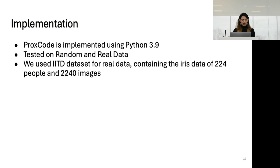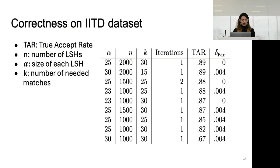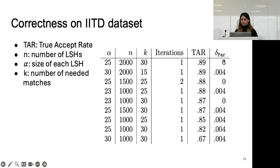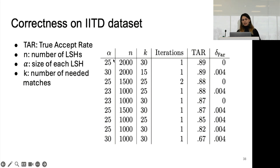We implemented this construction and tested it on random and real data. The real data used was the IATD dataset, which contains iris data of 24 people. The best true accept rate achieved was 89% with delta_4 — the fraction of the database incorrectly returned — equal to zero. Here, alpha is the size of the LSHs, n is the number of LSHs, and k is the number of matches needed to select the closest item from the database to the query.